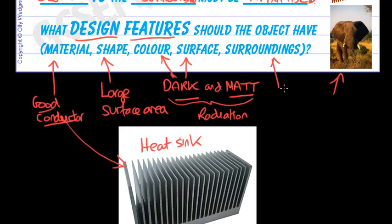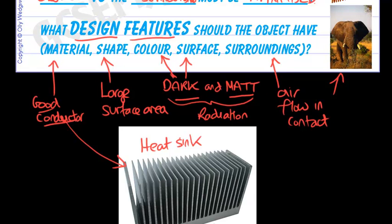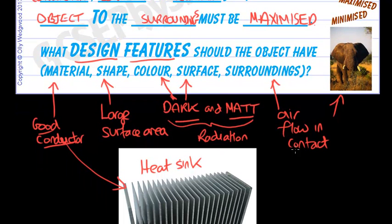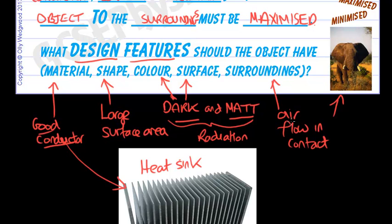Lastly, the surroundings. Airflow in contact with the surface means we can lose energy via convection much more easily. We don't want to trap air, because that would be like wearing a woolen jumper — air is a bad conductor. So having moving air in contact with the object is going to maximize the heat transfer and keep the object cool.